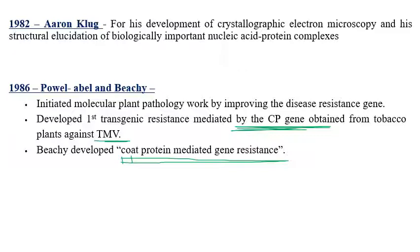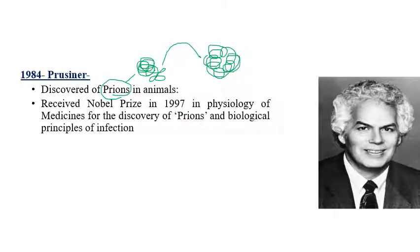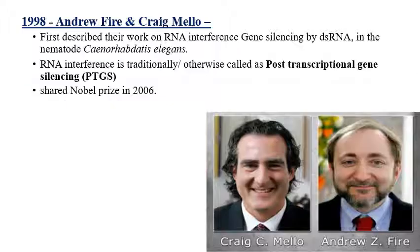Prusiner discovered prions in animals — infectious proteins with the capability to transmit their infectious nature to normally functioning proteins. Prions are malfunctioned proteins present in the brain. For the discovery of prion diseases in animals and humans, Prusiner received the Nobel Prize in 1997 in Physiology and Medicine.